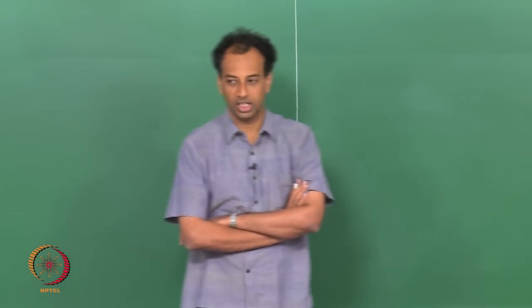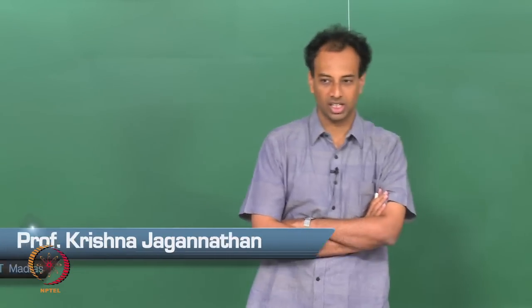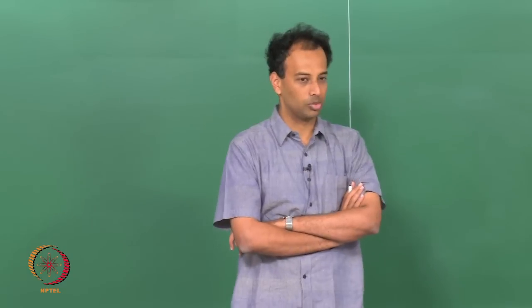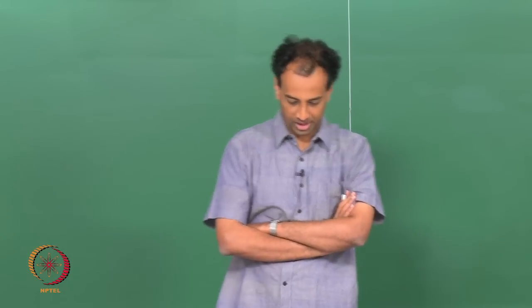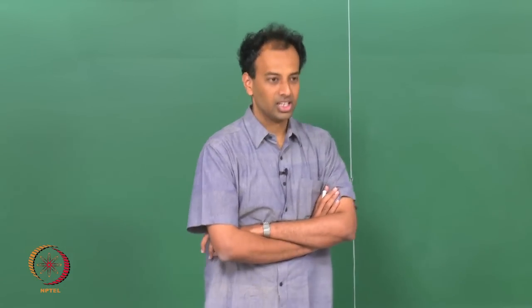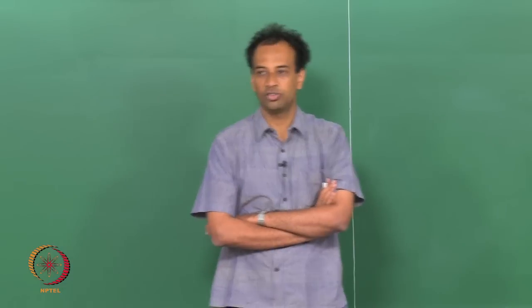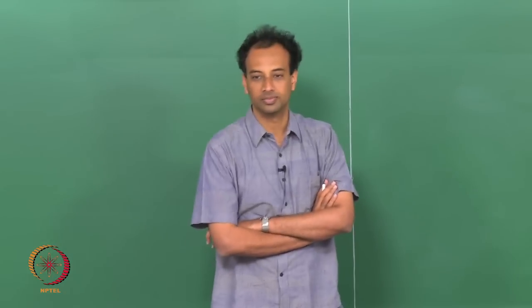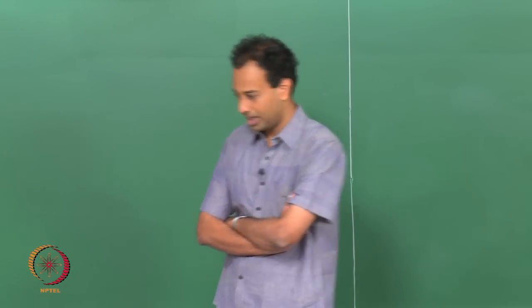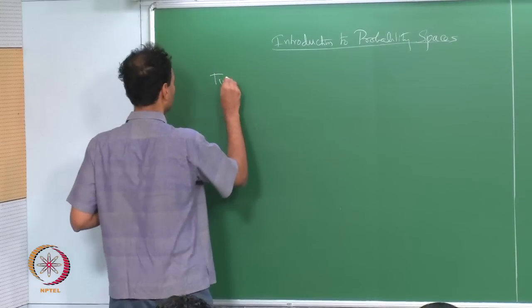Welcome back. Today we will begin the study of probability theory from the basic axiomatic perspective. We will start building on the basic probability axioms and work towards defining probability spaces, probability measures, and so on. In this mathematical theory of probability, it is an axiomatic theory which starts off assuming that there are two entities which are not defined.